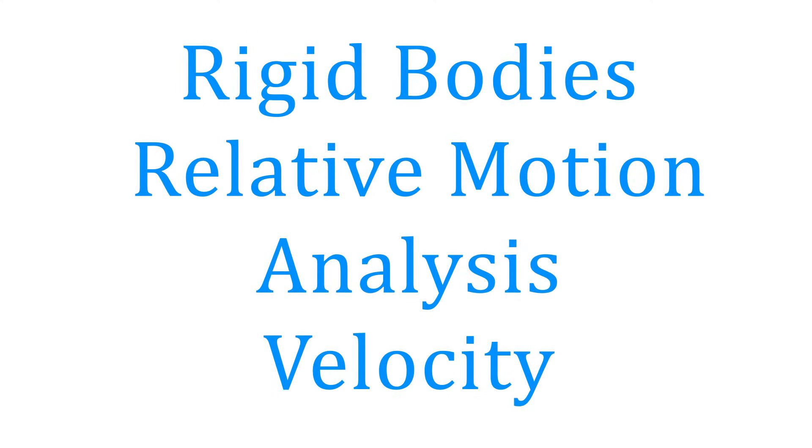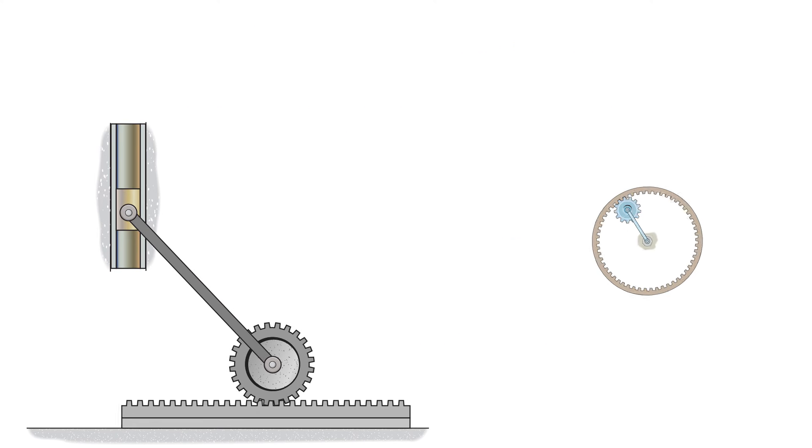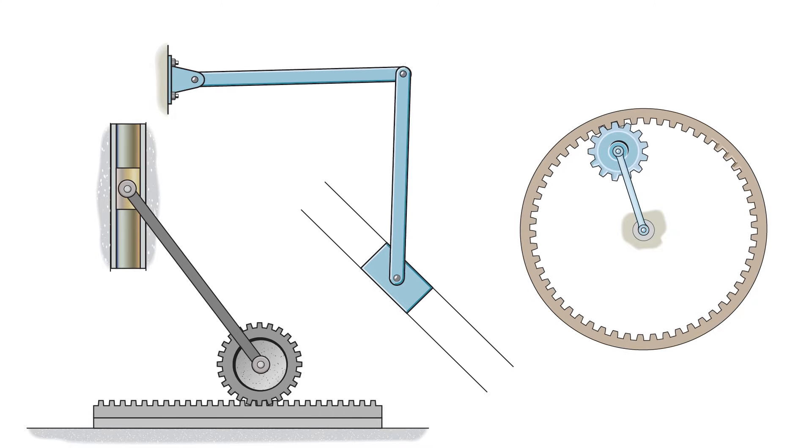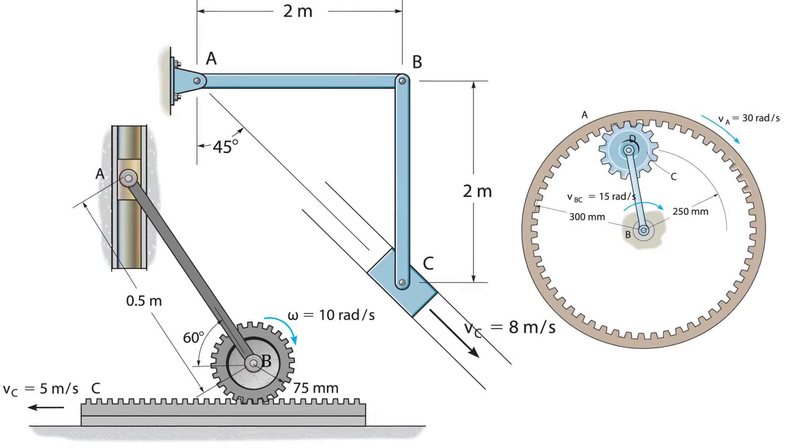Let's take a look at how we can use relative motion analysis to figure out the velocity of one point if we know the velocity of another point. Let me clarify that sentence with an example.